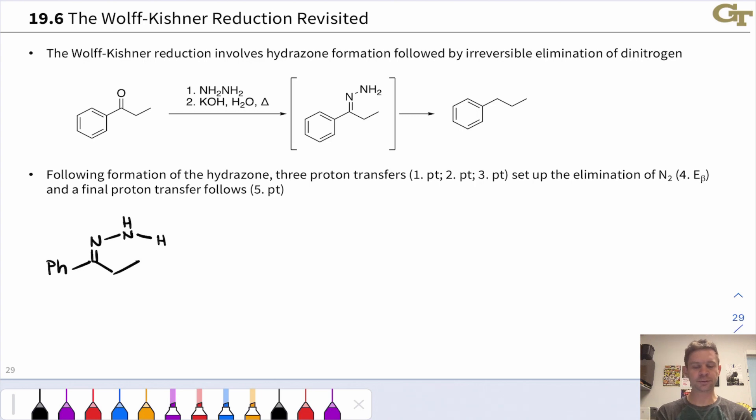Following formation of the hydrazone, we see some chemistry that takes advantage of resonance stabilization built into the conjugate base of a hydrazone and the fact that this can eliminate nitrogen, and this is essentially the basis of this mechanism. So following formation of the hydrazone, we can deprotonate at that hanging NH2 group to create a resonance stabilized anion. This is a good opportunity to pause and make sure you can draw a resonance structure of this anion showing how the charge is delocalized.